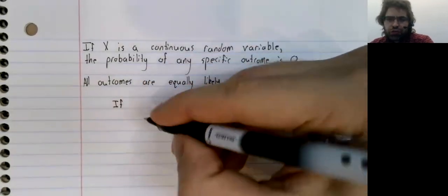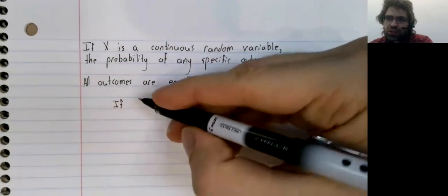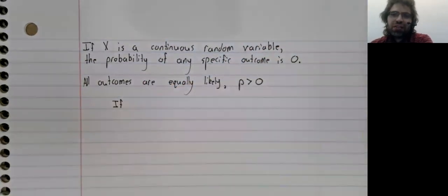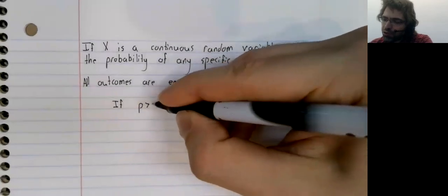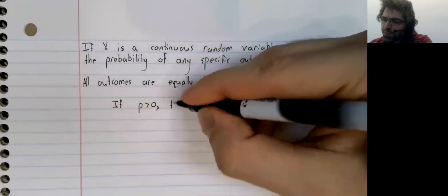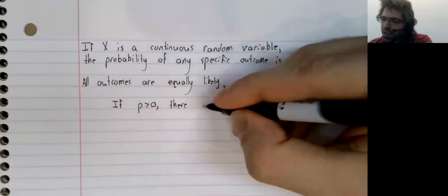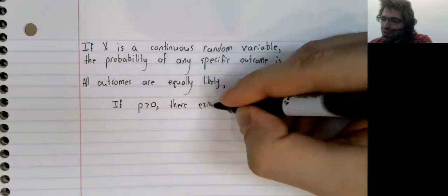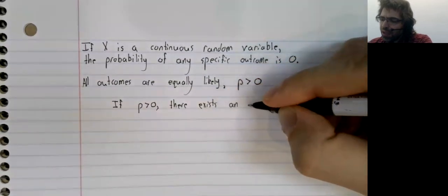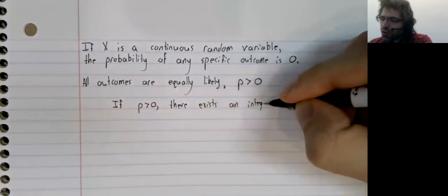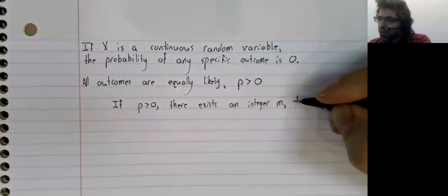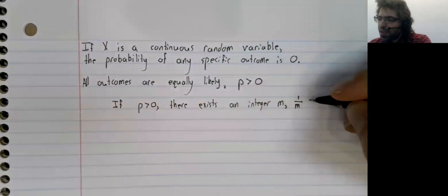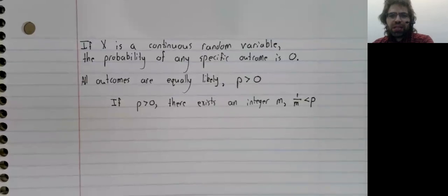And it's a true statement - I don't know if you've seen this proven yet, but if p is greater than zero, there exists an integer m such that one divided by m is less than p.